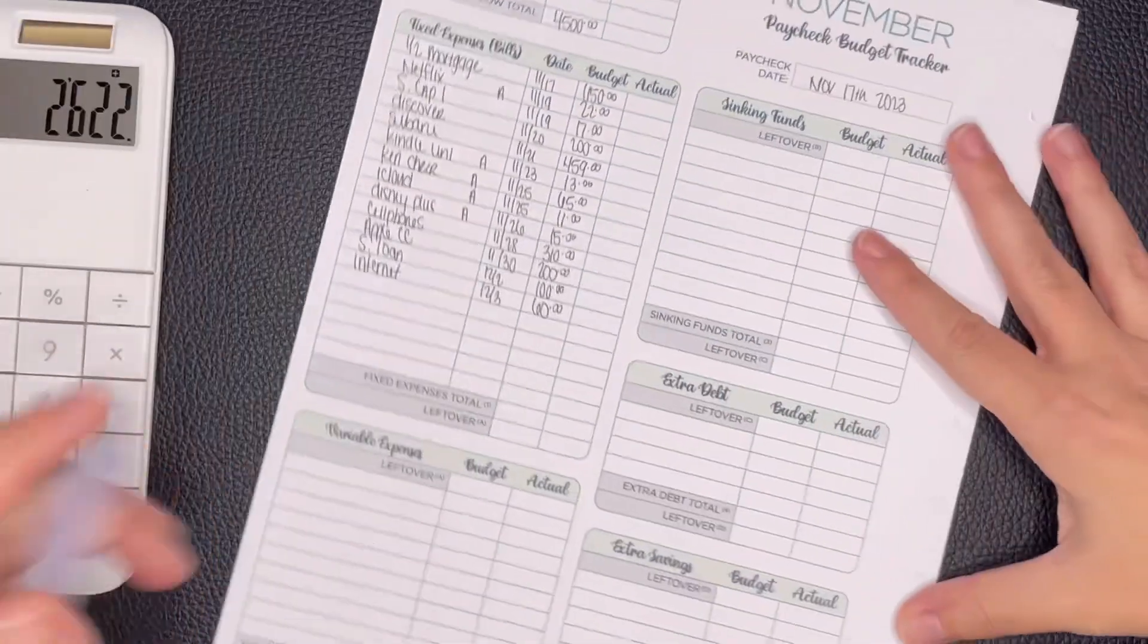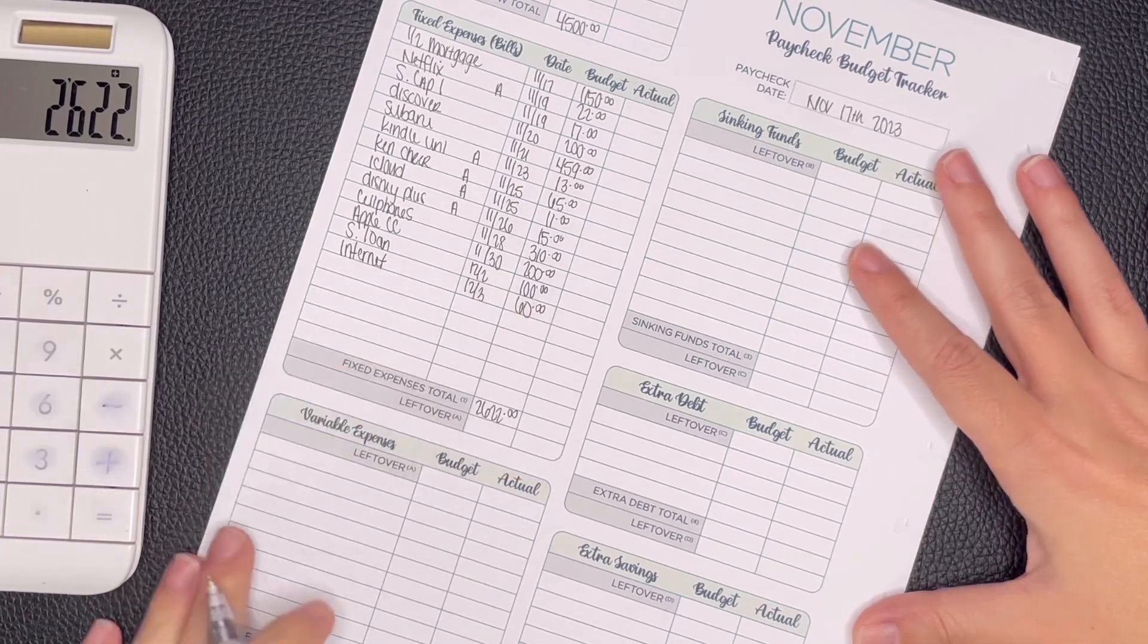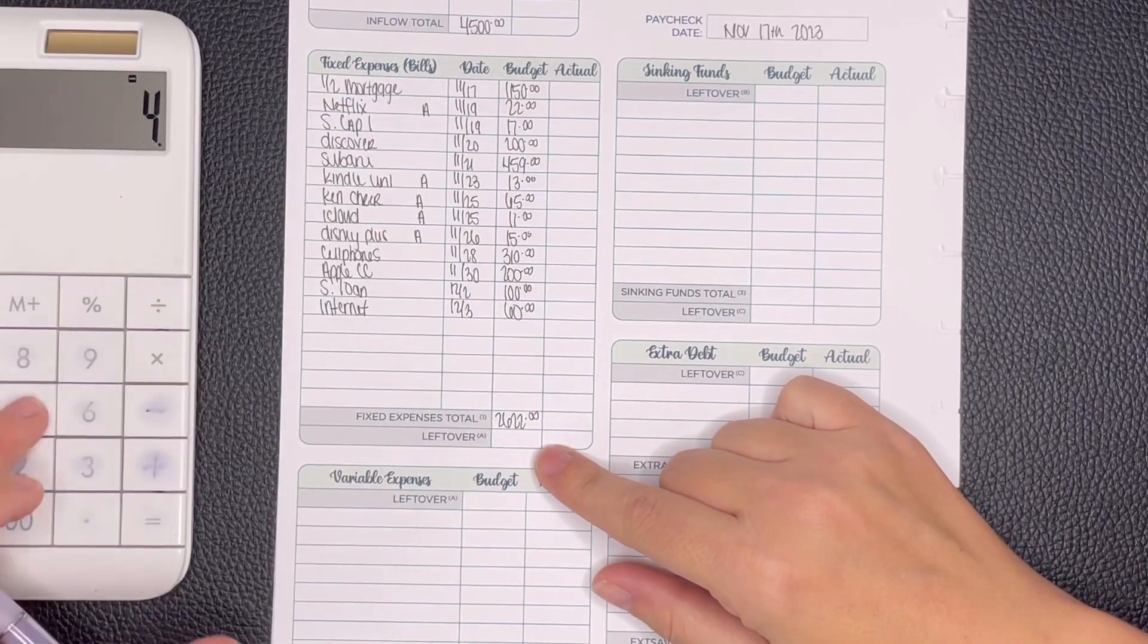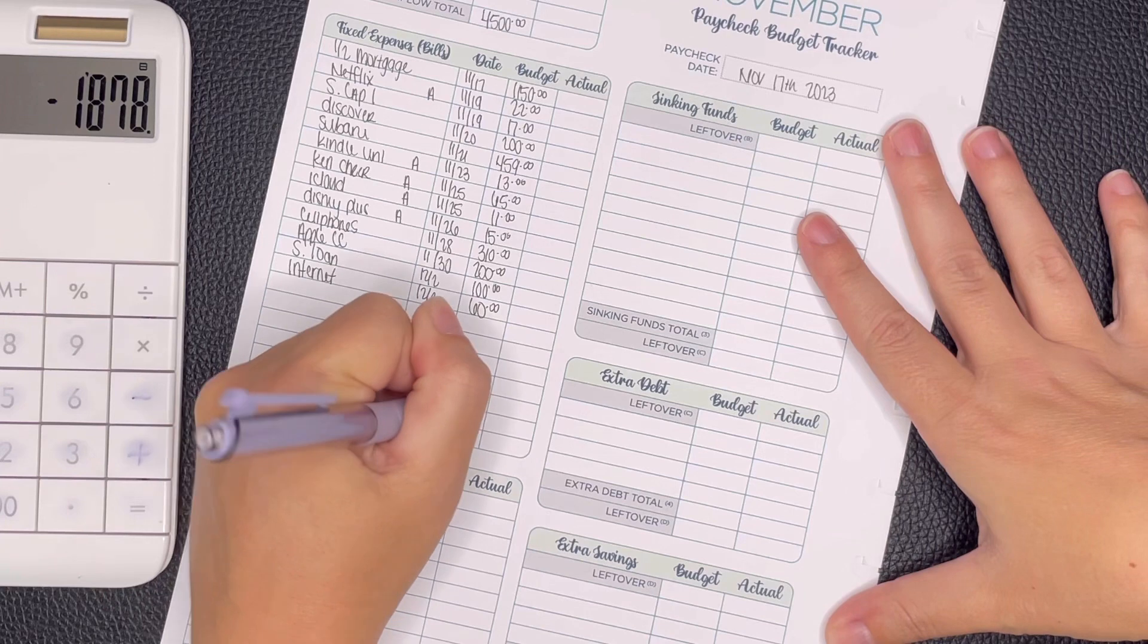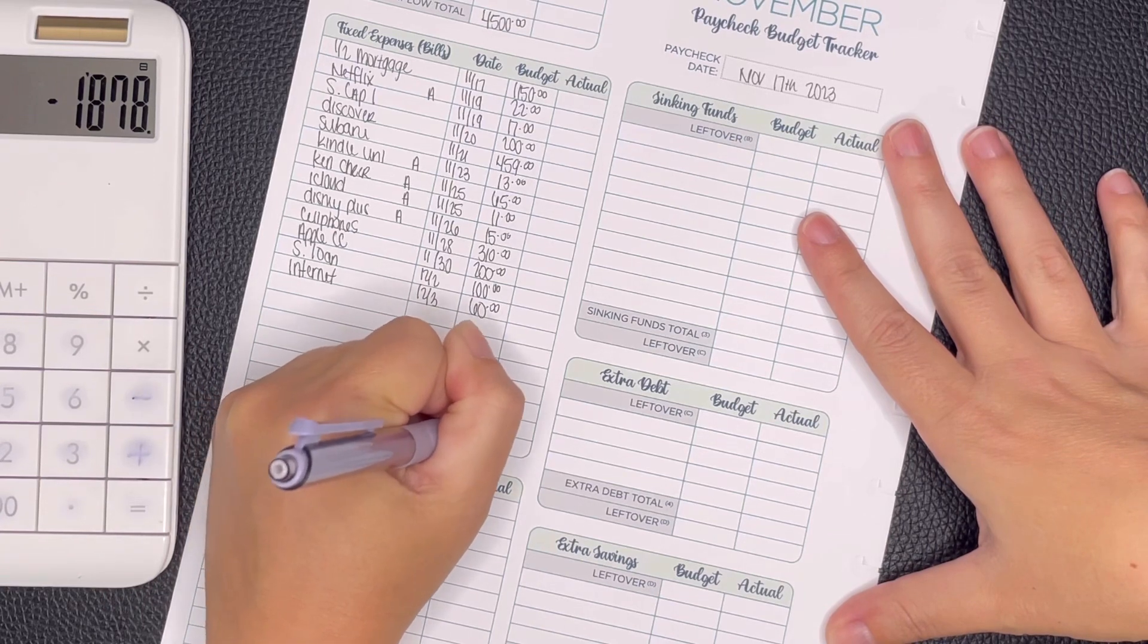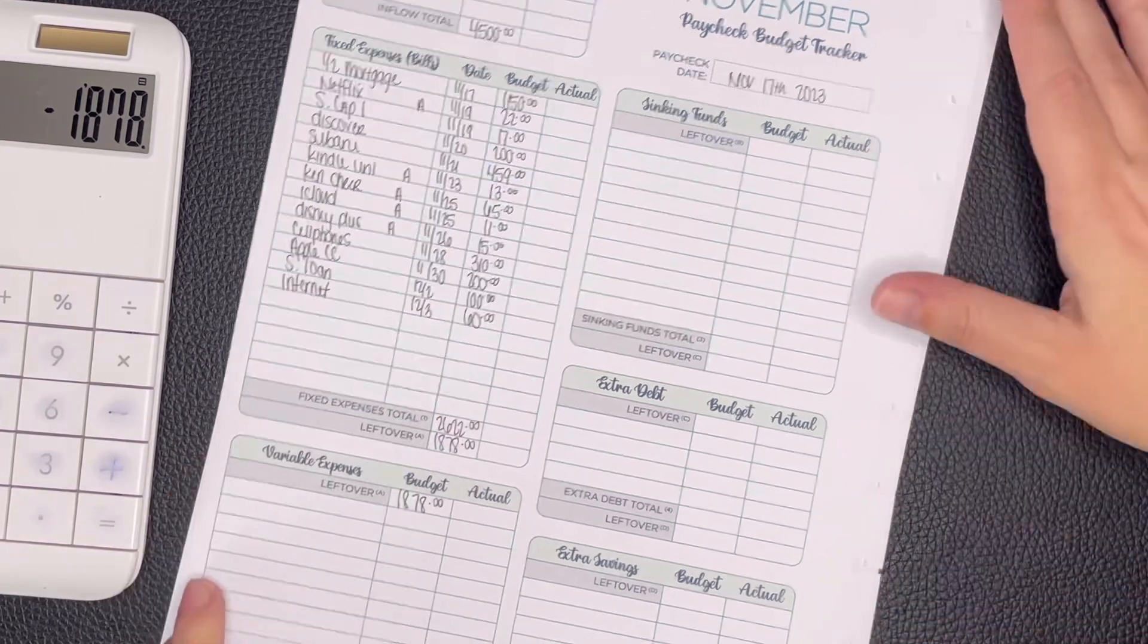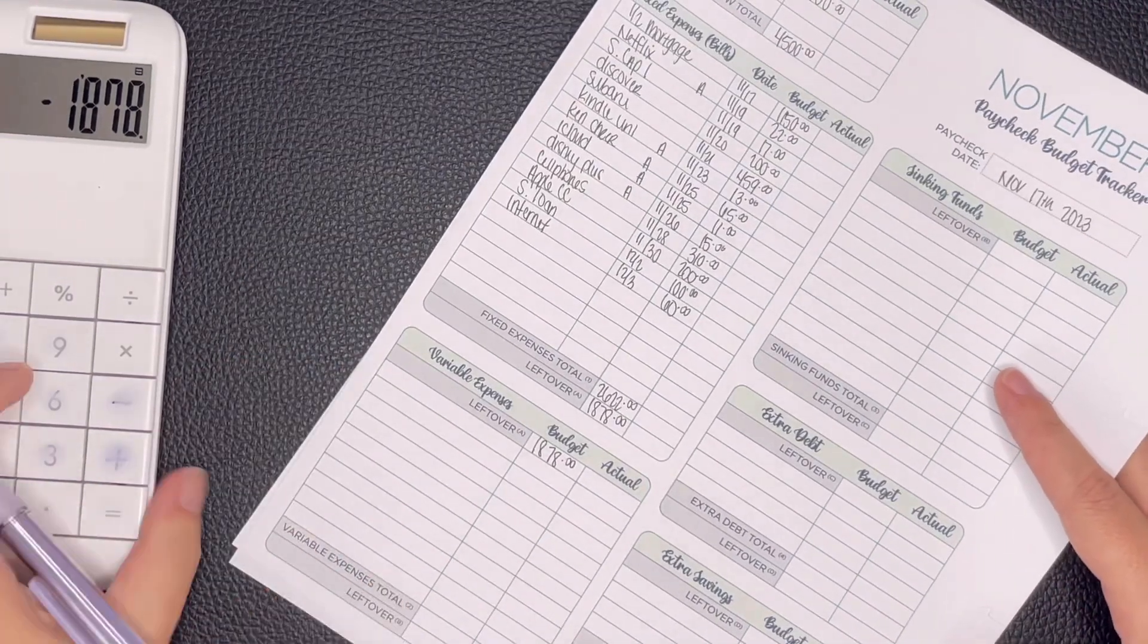That is everything. Let's add it up and see what we owe for expenses. We have $2,622. If we take that from our $4,500 of income, that leaves us with $1,878. We're going to bring that down to our variable expenses.